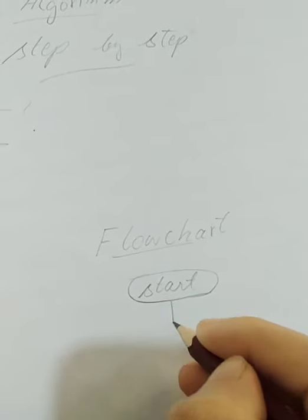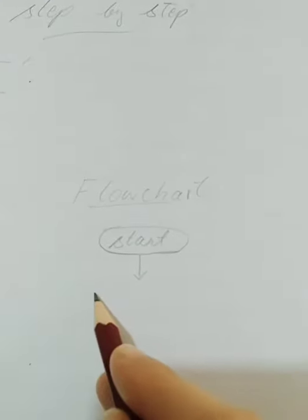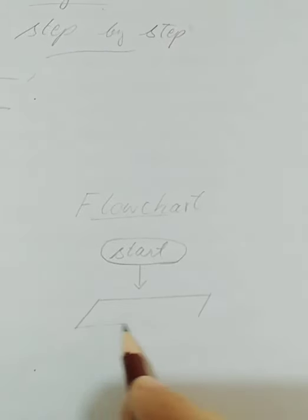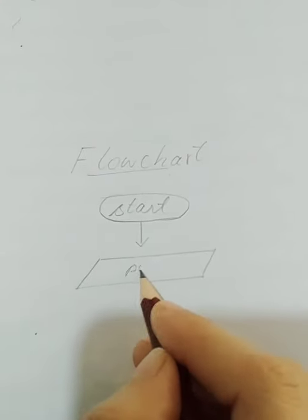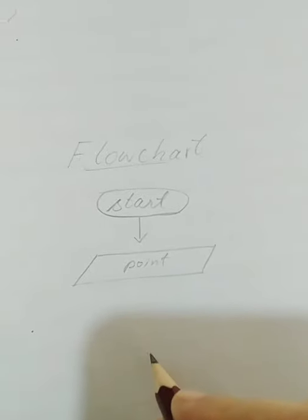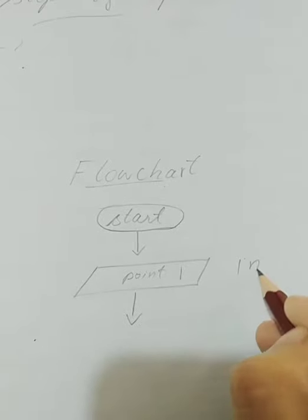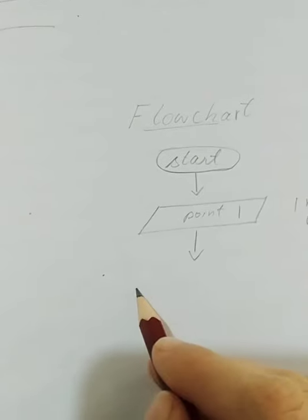We will see the flowchart now. This is the first image, first of all. Point number one. Now second, you have to do the input option. The point will be rectangle shape.